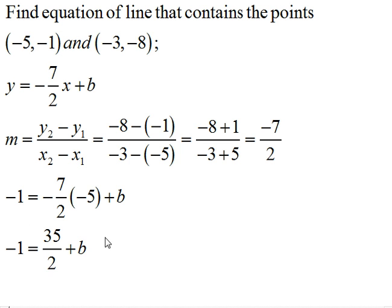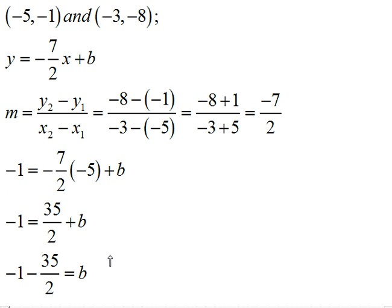Now, to solve for b, I need to subtract both sides by 35/2. So when I do that, I'm going to have -1 take away 35/2, and all that is going to be my b.